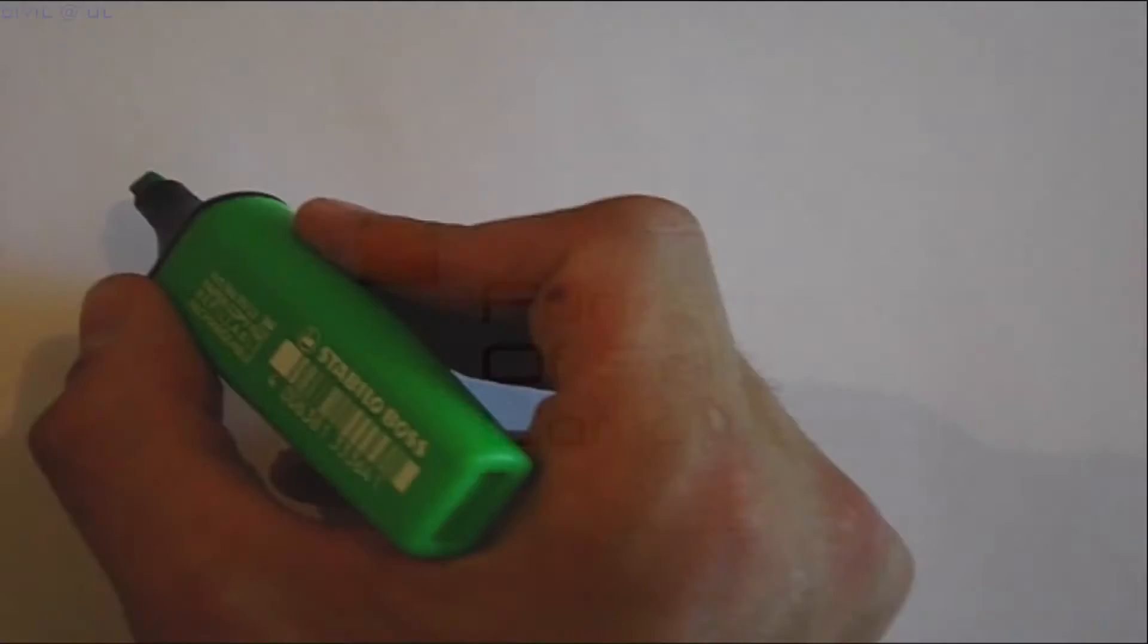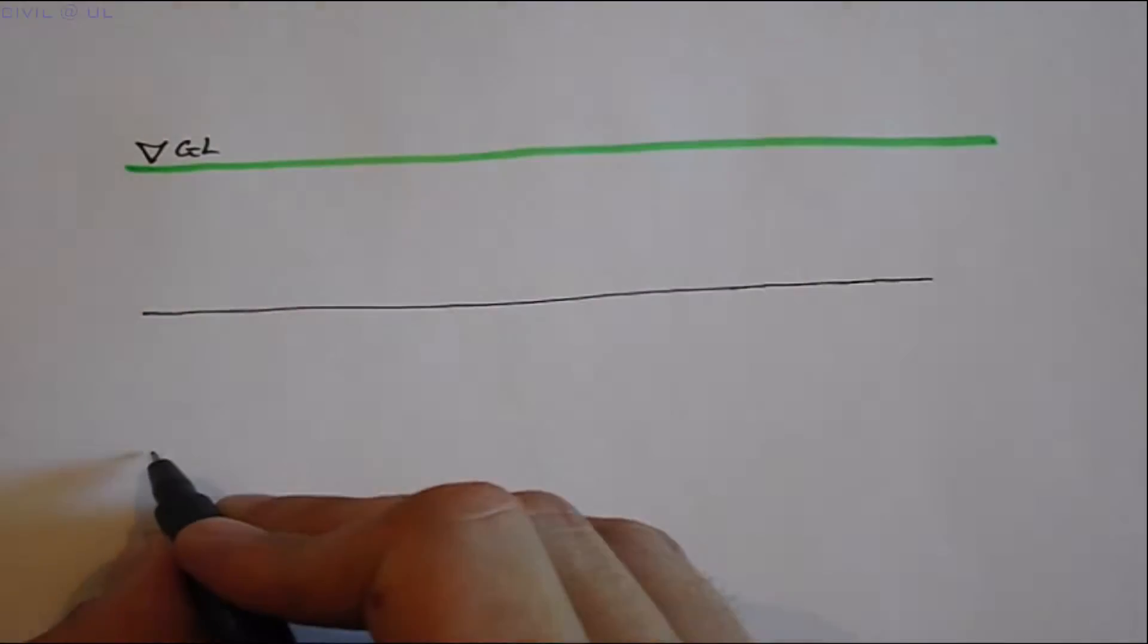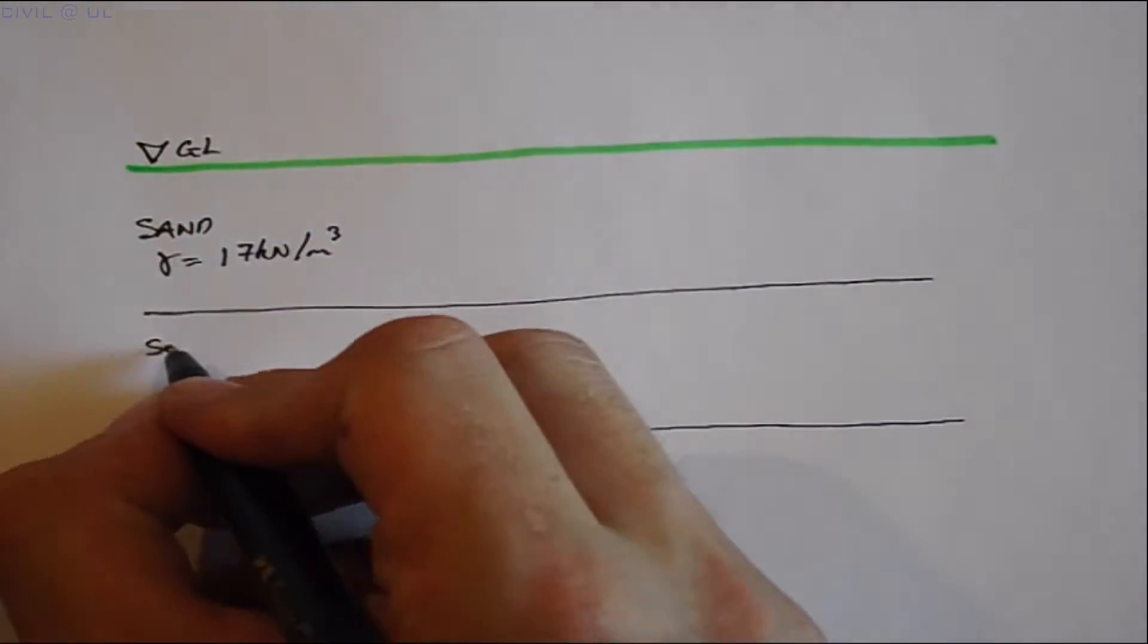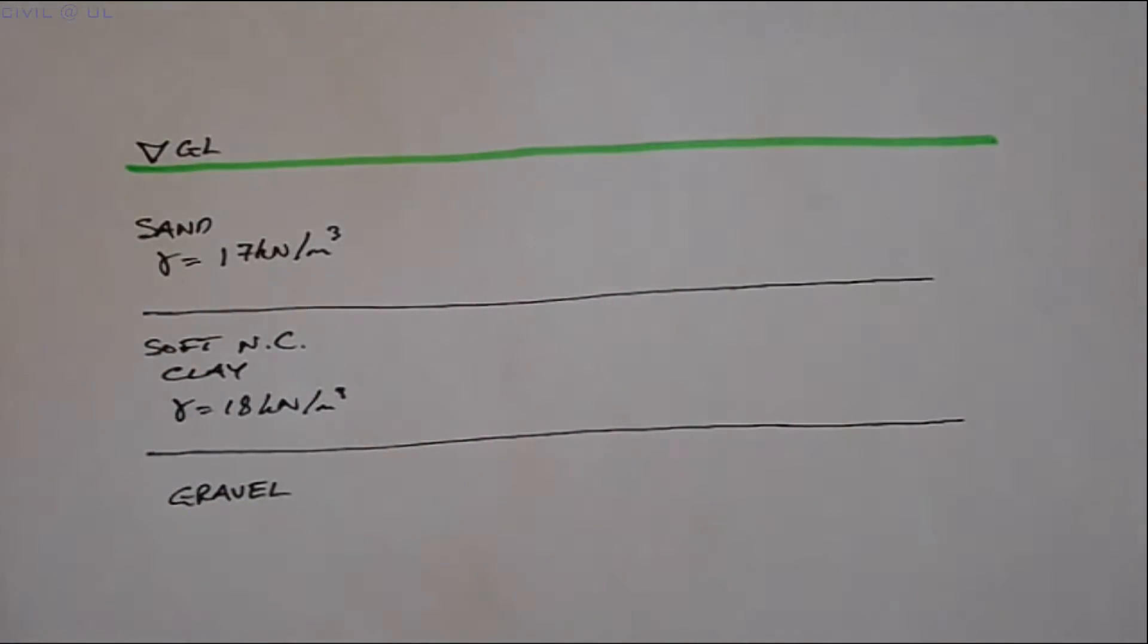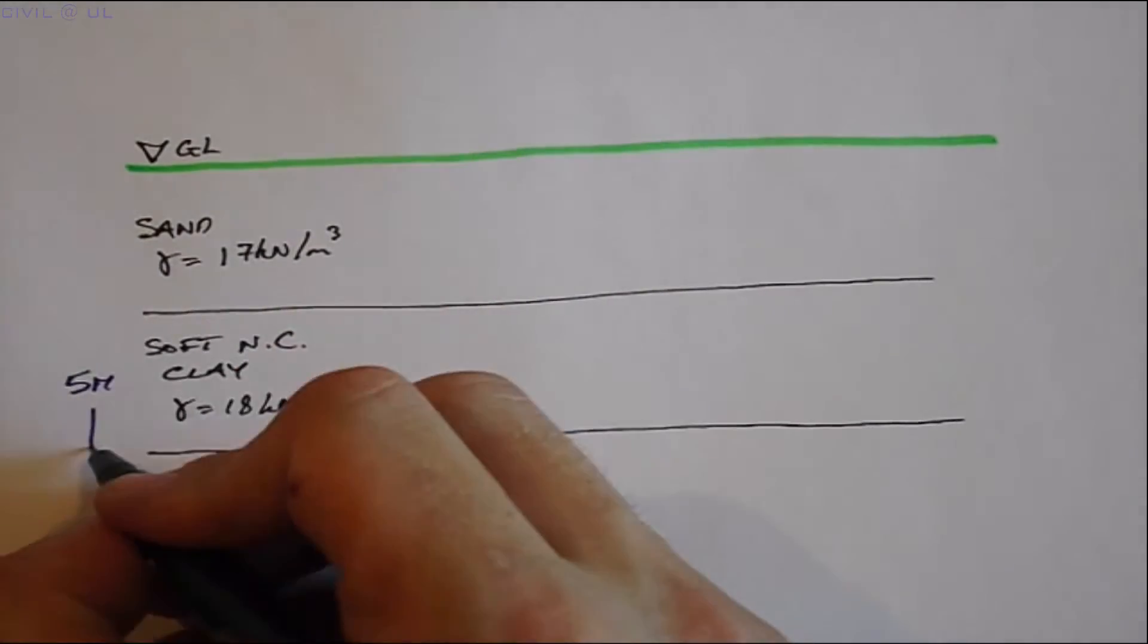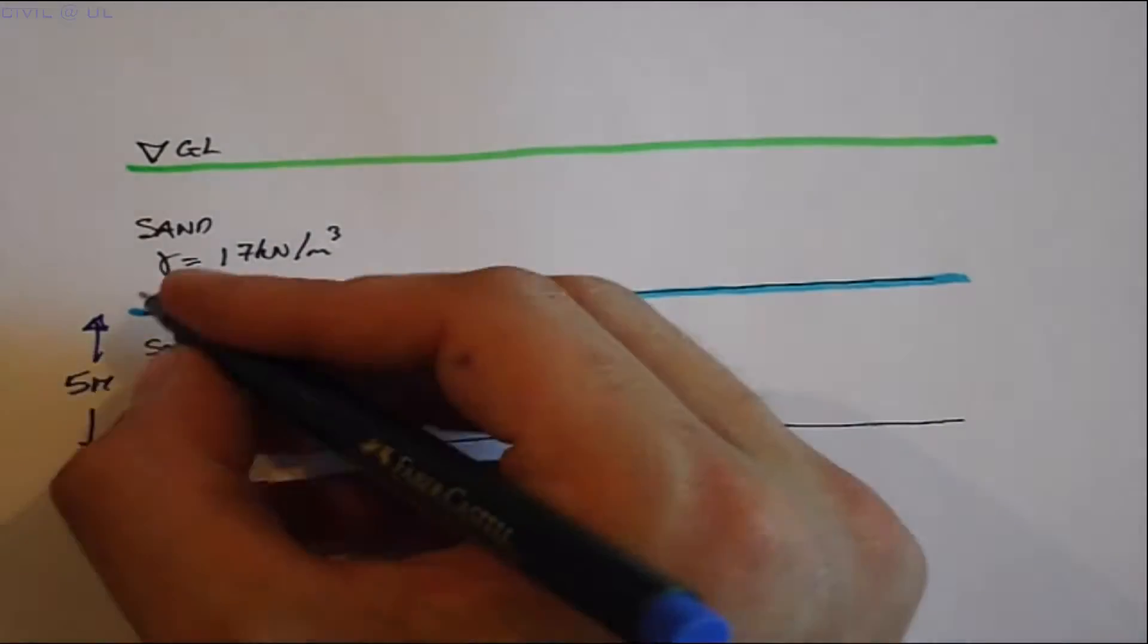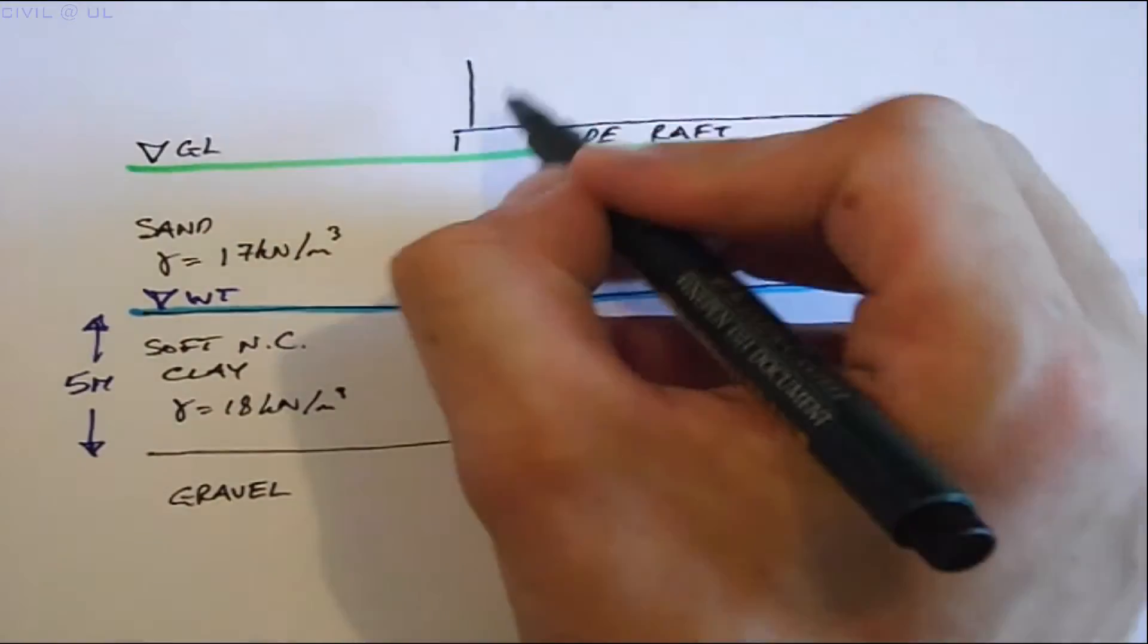In this video, we will look at how settlement calculations are undertaken in practice. Take the following soil stratigraphy revealed by a site investigation. We note there is a strata of soft, normally consolidated soil that extends for a depth of 5 meters below stratum 1.